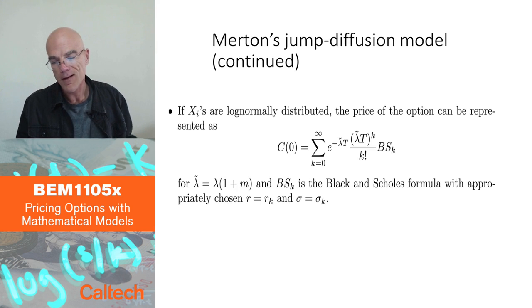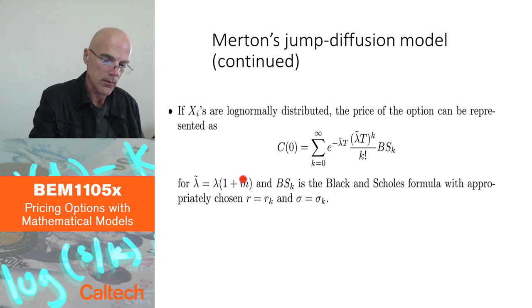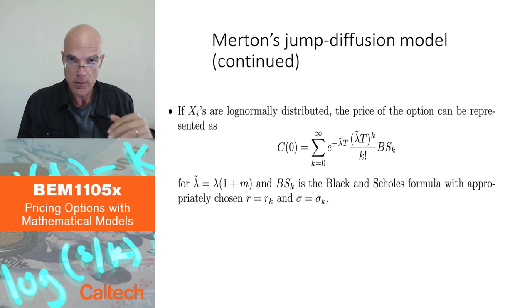So effectively, for practical purposes, what happens, you have replaced a one parameter model, where the parameter is sigma, with, in this case, a three parameter model. So you have lambda and you have M also. And so you get a more flexible model. It can fit the data better because you have three parameters, not one. Still not too many parameters.